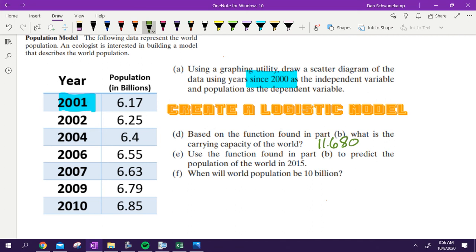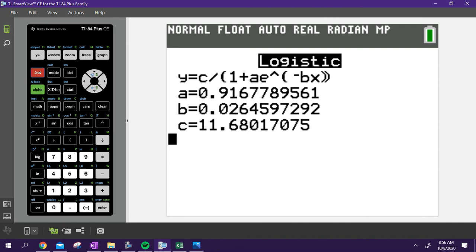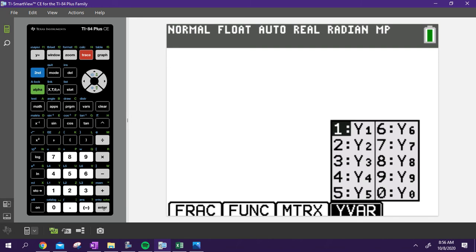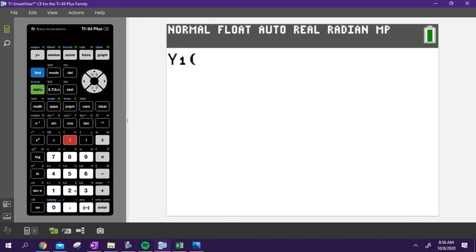Part E says: use the function found in part B to predict the population of the world in 2015. So we're going to figure out the population in 2015. The best way to do that is go Alpha F4, Y1. What number do I put in parentheses? 15. As long as you put your data from the year 2000, I can put 15 in there. Boom, 7.226.